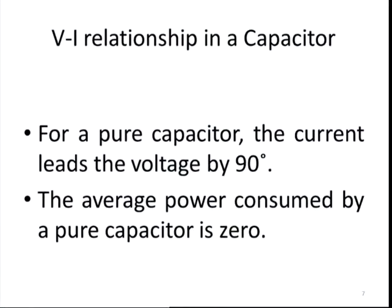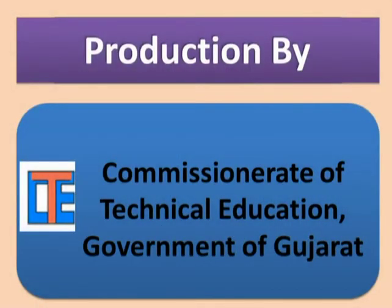We conclude that for a pure capacitor, the current leads the voltage by 90 degrees and the average power consumed is 0. Today we found that for a pure resistor the voltage and current are in phase; for an inductor the voltage leads the current by 90 degrees; and for a capacitor the current leads the voltage by 90 degrees. For a pure resistor, the average power consumed equals the product of the RMS values of voltage and current, but for a pure inductor and pure capacitor the average power consumed is 0. Thank you.